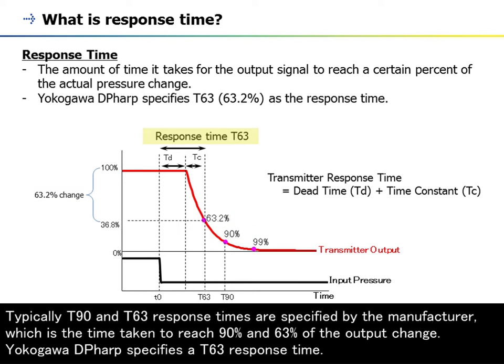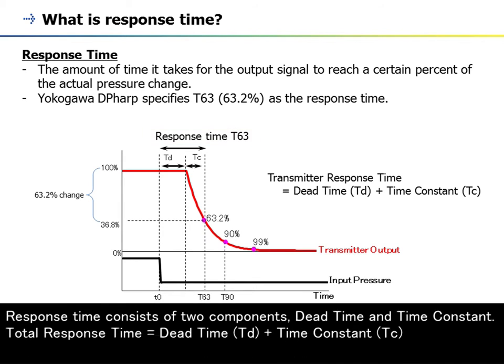Yokogawa DP-HARP specifies a T63 response time. Response time consists of two components: dead time and time constant. Total response time equals dead time, Td, plus time constant, Tc.